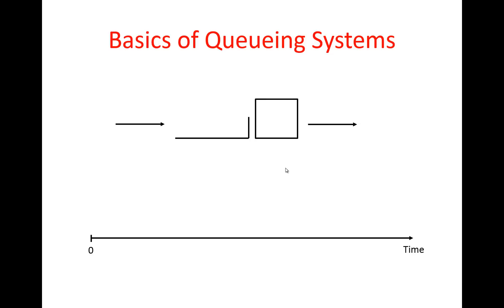Let's see how a queuing system works as entities arrive and get processed. To see the dynamics, I have a single-server queuing system here with only one unit of capacity, so I cannot process multiple entities at the same time. I have my timeline starting at time zero. At some point our first entity arrives — I mark this event as A1 — and from time zero to that arrival I have my first inter-arrival time, IAT1.